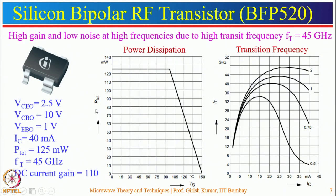A practically available RF transistor example is the BFP520, which provides higher gain, low noise, and a transition frequency of 45 GHz. Its performance degrades with temperature — it provides 125 mW power up to 100°C. The transition frequency of 45 GHz is at Vce = 2 V. Other specifications include reverse voltage, forward voltage, and output current. It provides a decent gain of around 20 dB.